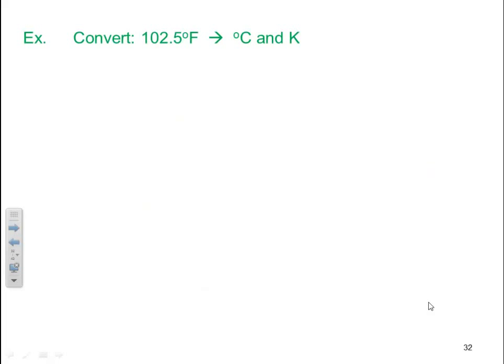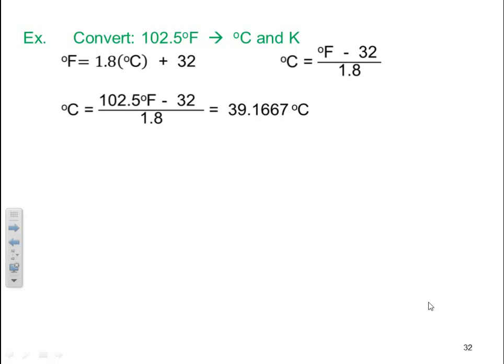Let's do some examples. Let's convert 102.5 Fahrenheit to degree C as well as Kelvin. Now you might notice that for Fahrenheit and Celsius, we have degree symbols, and when we're talking about Kelvin, we do not have one. Well, we have to figure out the equation we want to use. We're going from Fahrenheit to Celsius. So we use degree Fahrenheit equals 1.8 times degree C plus 32. I want Celsius, so I've got to rearrange this. So I subtract 32 and divide by 1.8, which gives me my new equation. I plug in my value. My Fahrenheit was given. So 102.5 Fahrenheit minus 32 divided by 1.8 gives me 39.1667 degrees C. And then to give my final answer, which is 39.2 degrees C.